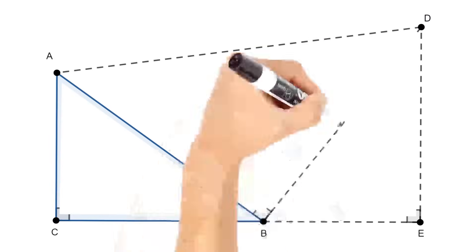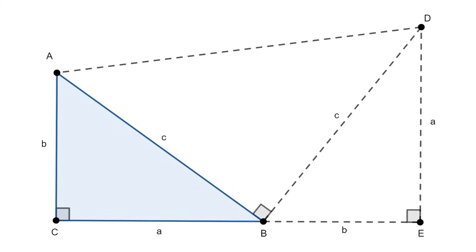This is a proof by American president, James Garfield, which relies on the area formula of a trapezoid. And the sum of these three triangles equal the area of the trapezoid and simplifying the resulting algebraic equation results in the equation of the Pythagorean theorem.